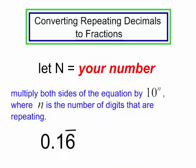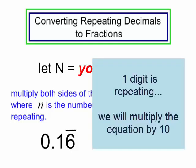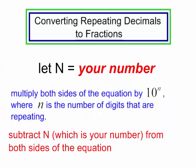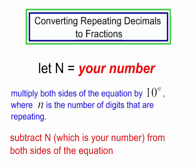For 0.16, I only have one digit repeating, so I will multiply both sides of the equation by 10 to the first, which is just 10. After that, I'm going to subtract n — which is your original number — from both sides of the equation, and I will eventually solve this and get a fraction.